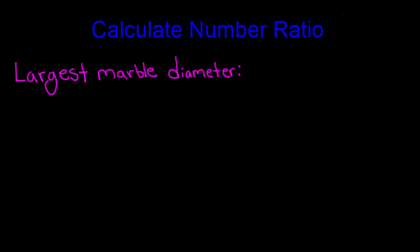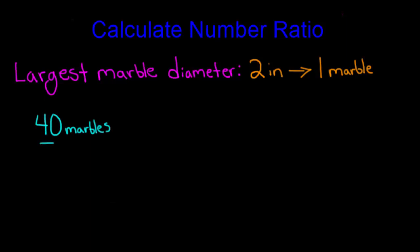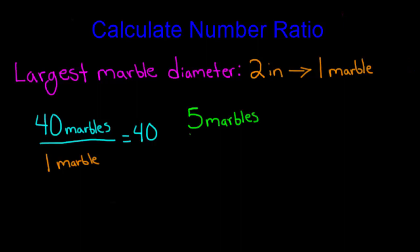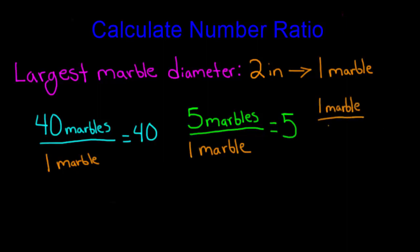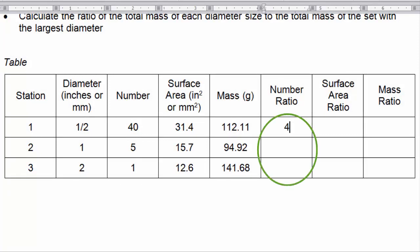Next, learners should calculate the number ratio for each station using the largest diameter marble in the denominator as the reference group. In our example, the largest diameter marble was 2 inches, and we only had one marble of this size. We would then compare our first station, which had 40 half-inch marbles, to the one marble in our reference group, giving us a number ratio of 40. Our five marbles at station two gives a number ratio of 5, and the one marble at the third station compared to itself gives a number ratio of 1. We then enter these number ratios into our table.